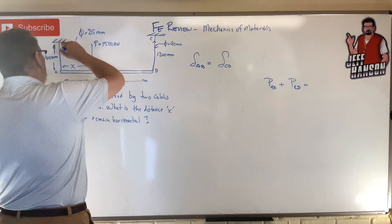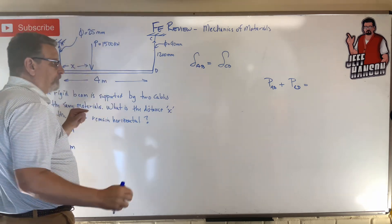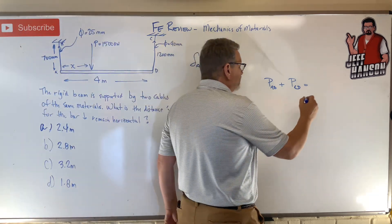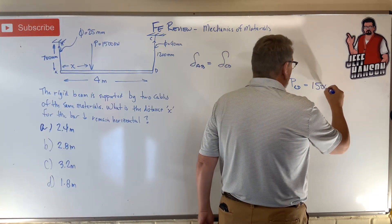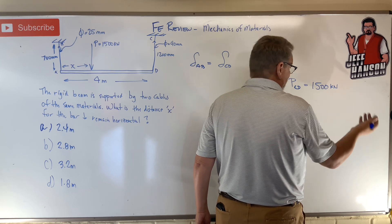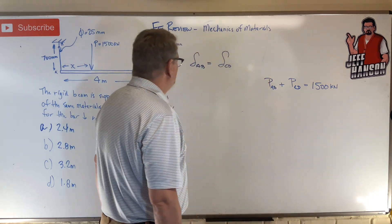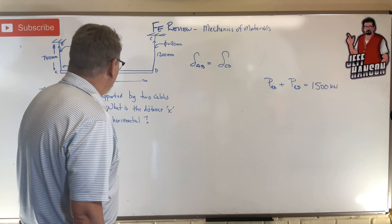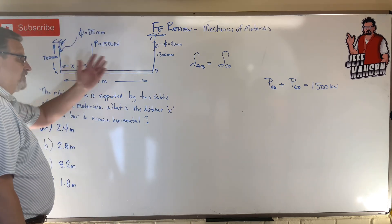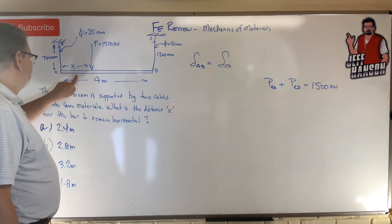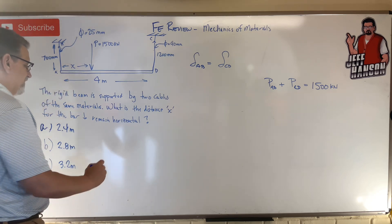I got two cables that are pulling upwards and I got one force pulling downwards, so those two things together have to equal 1500 kilonewtons. I know that. Do I know anything else that has the X in it? Because those things don't have the X in it.